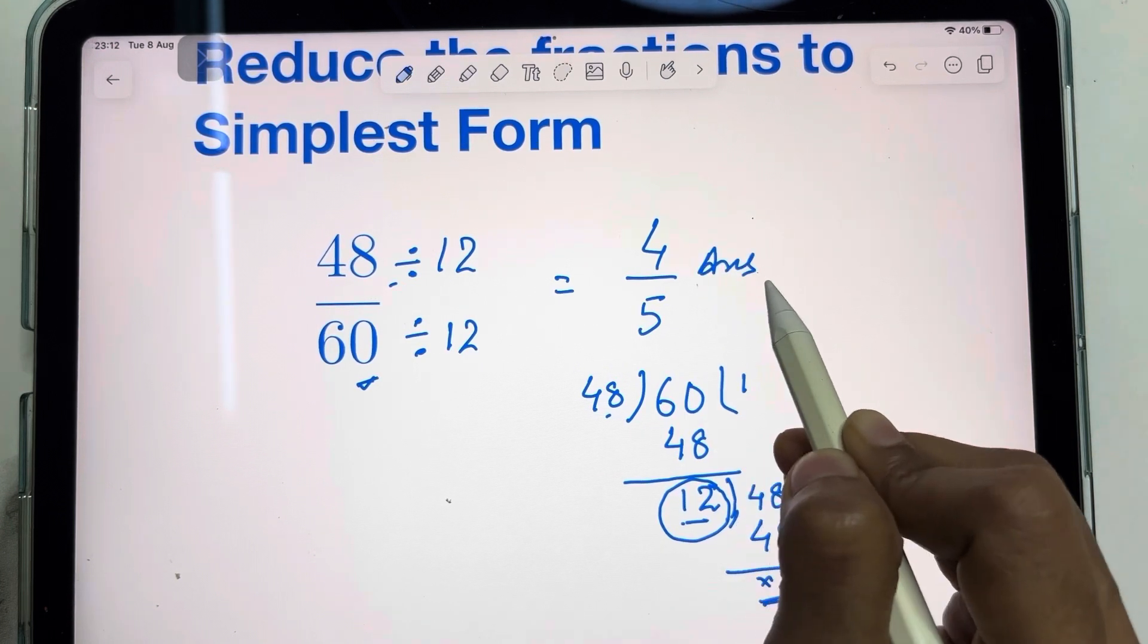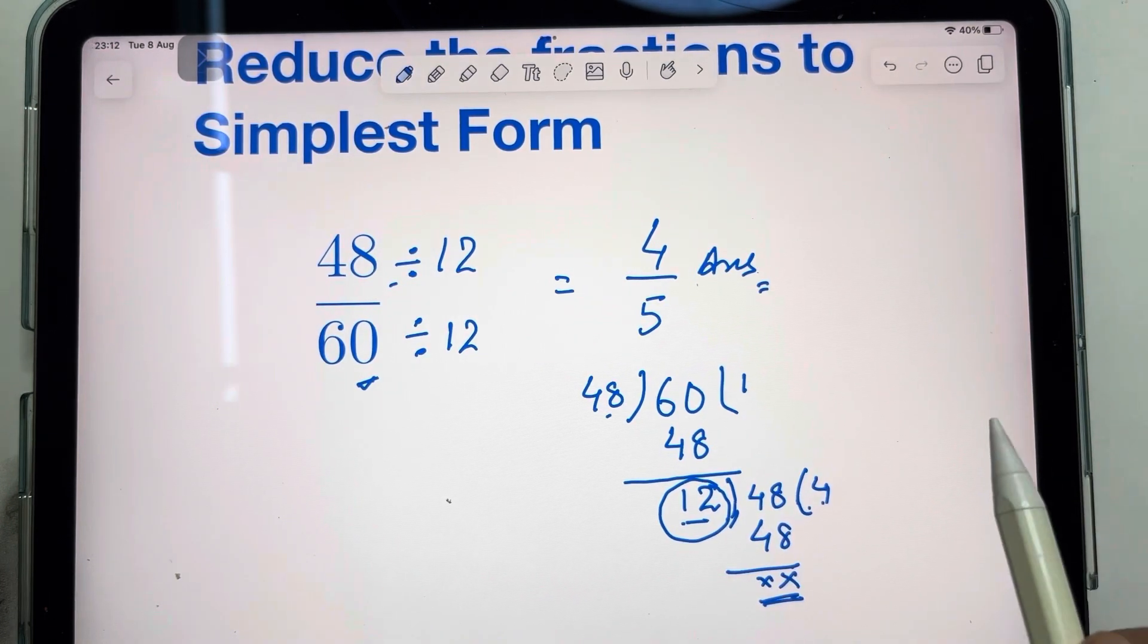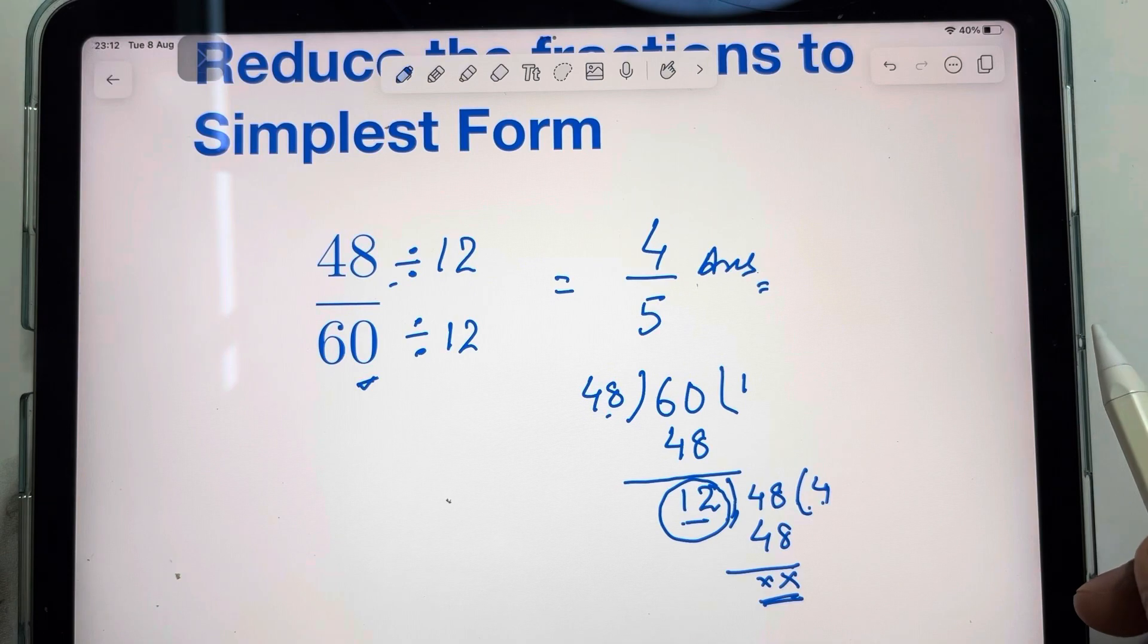So 4 by 5 is your answer. This method will take much less time than your prime factorization method.